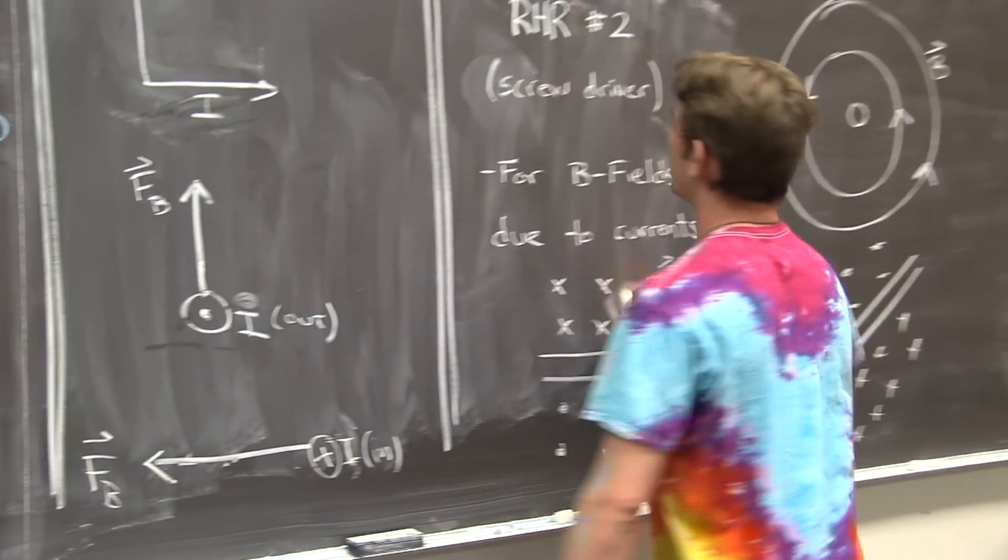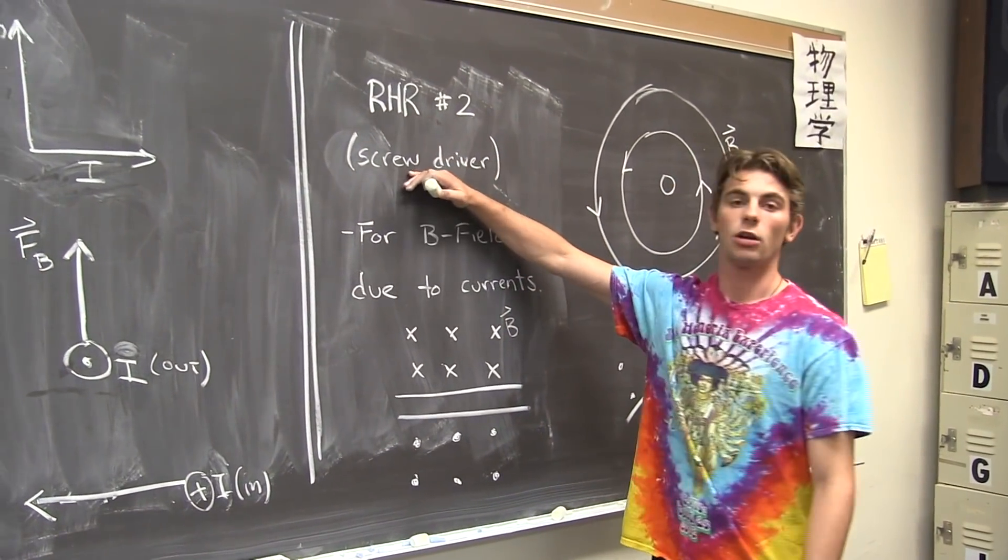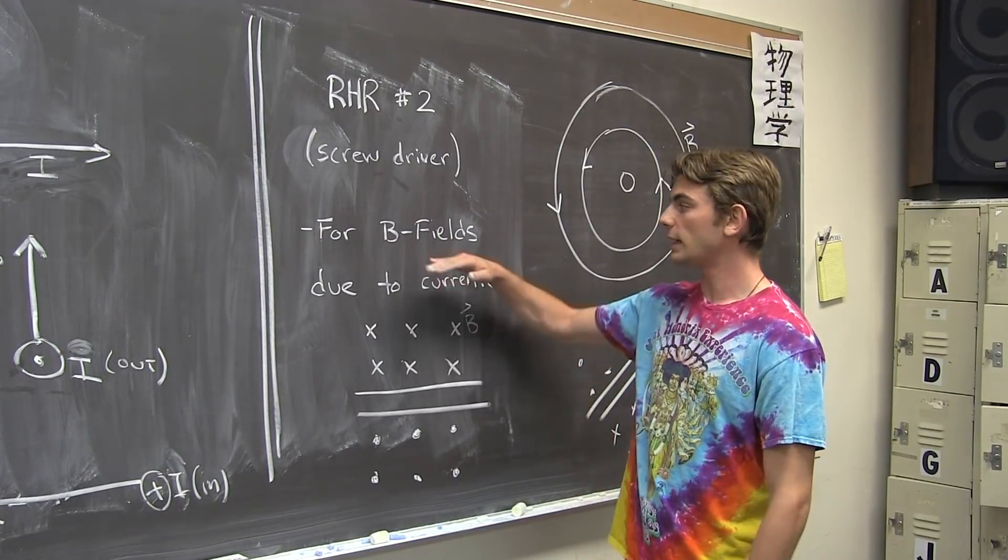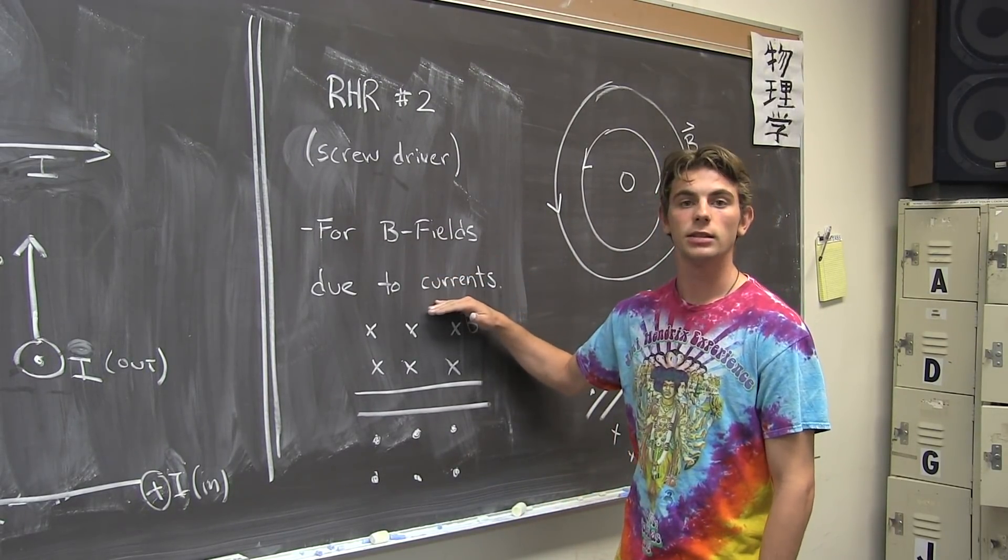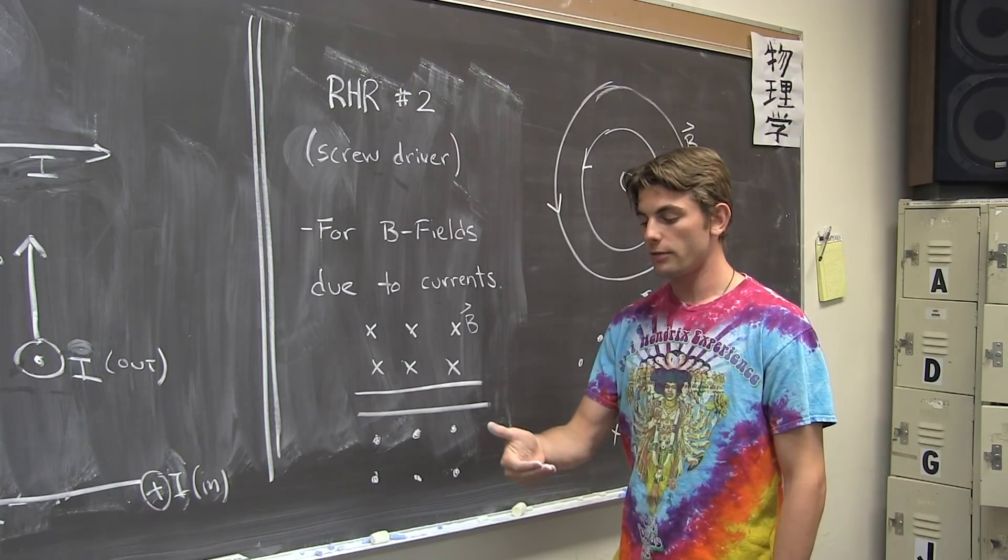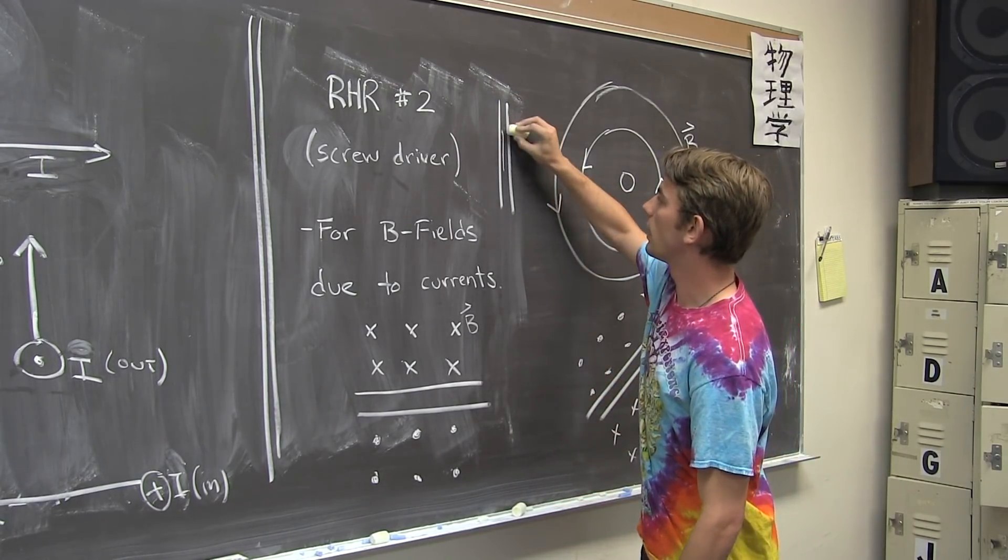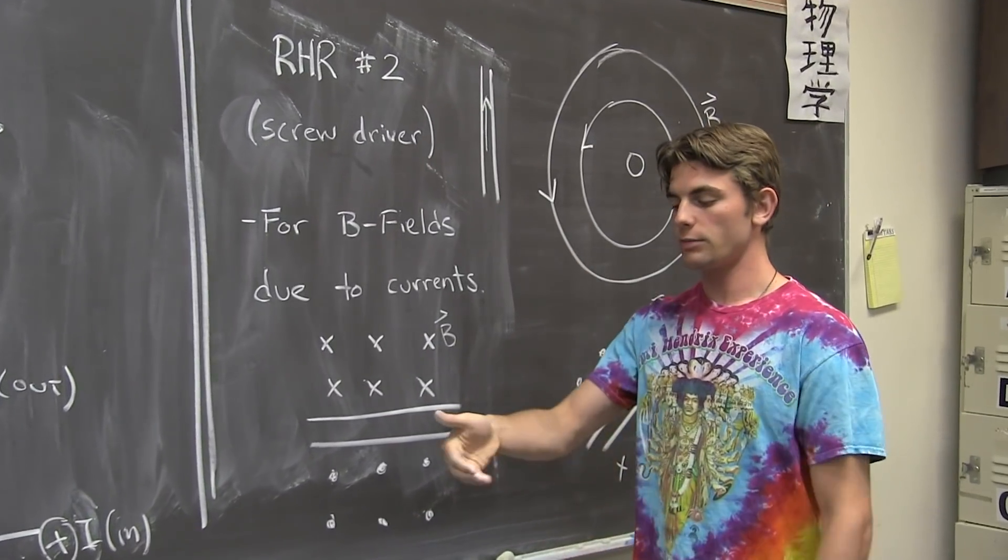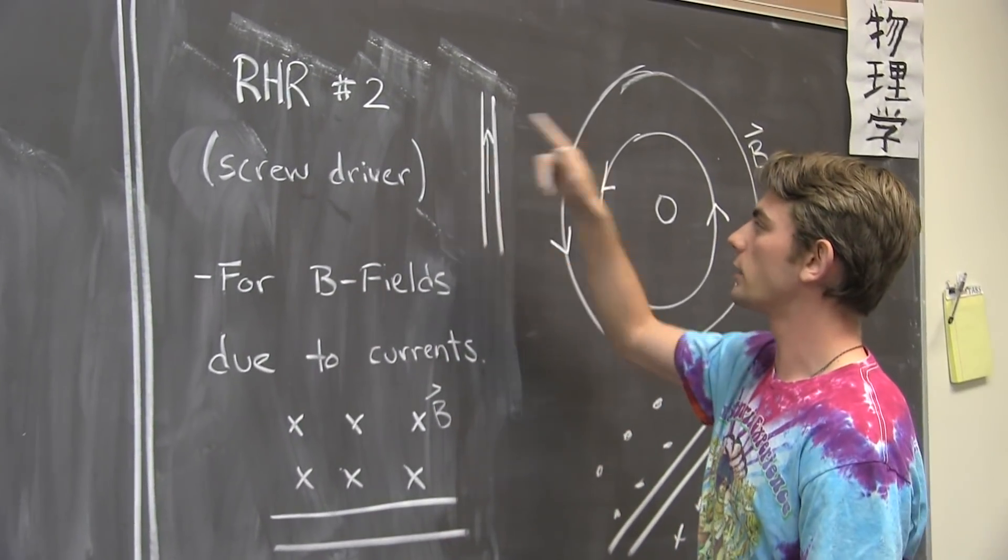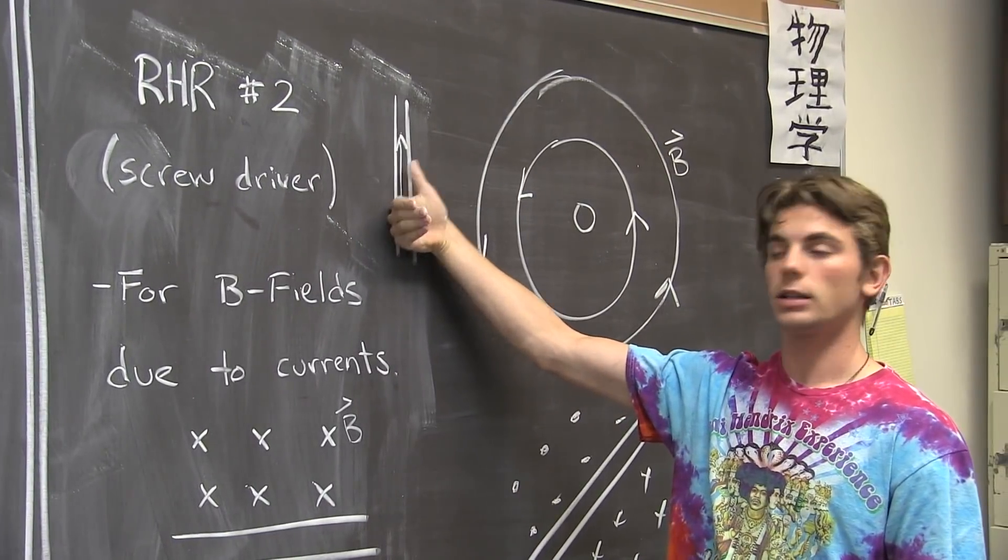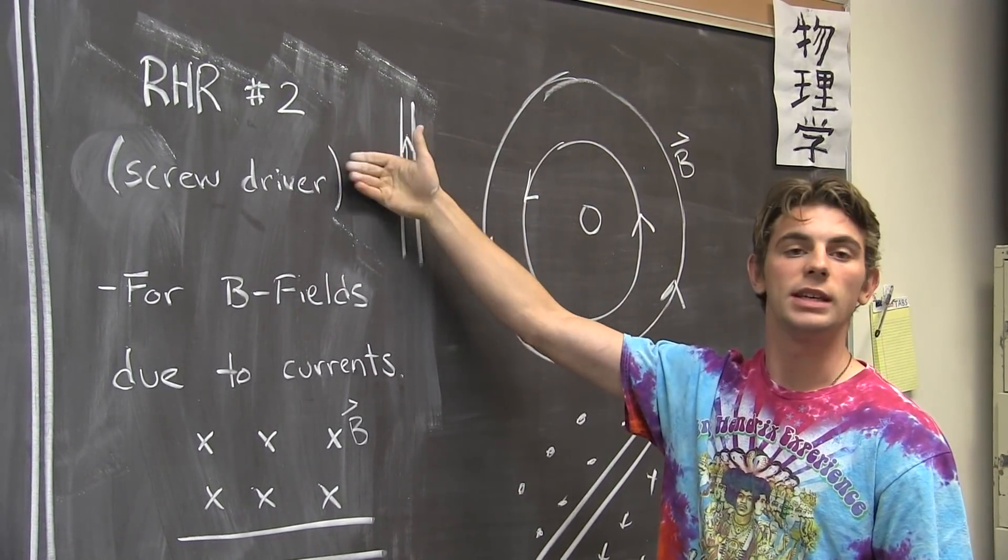Now, we also have another right-hand rule, which I will call the screwdriver right-hand rule, and this is for magnetic fields created by current. And that is, when you have a current, let's say it is going up here, a magnetic field makes loops around this current. And so, if we put our thumb in the direction of the current, the magnetic field is going to be the curl of our fingers.